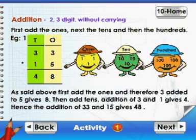Addition: two, three digit without carrying. First add the ones, next the tens, and then the hundreds.